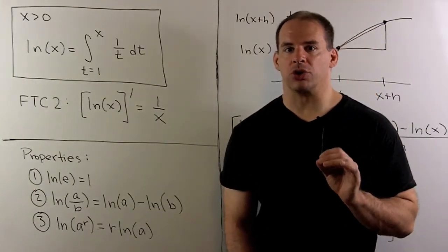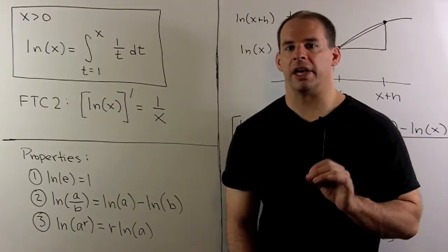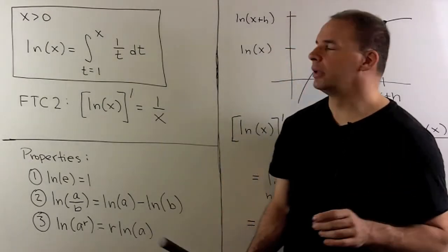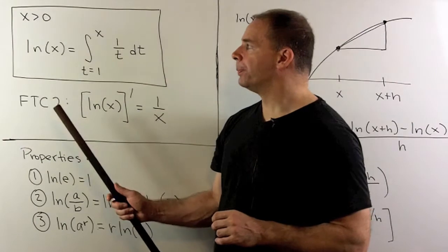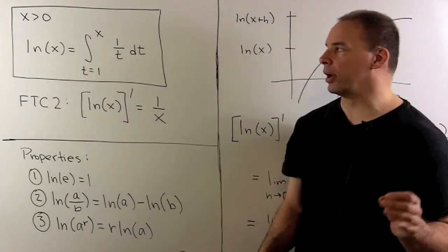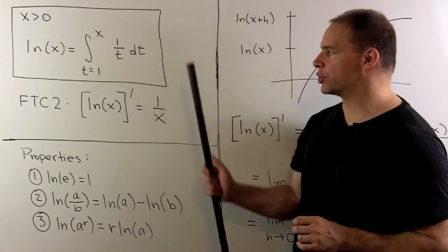Now that we've developed the main properties of natural logarithm, we want to take another look at the derivative. In our approach here, if I have x greater than zero, then we define natural log of x as a definite integral as t goes from one to x, one over t with respect to t.